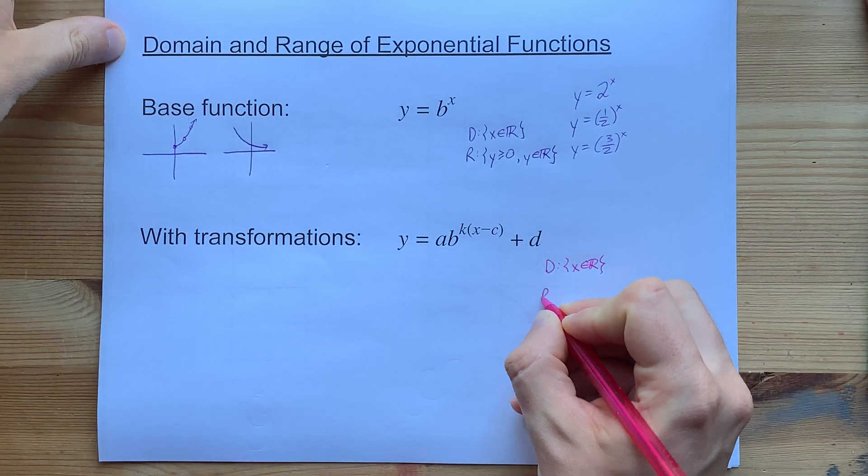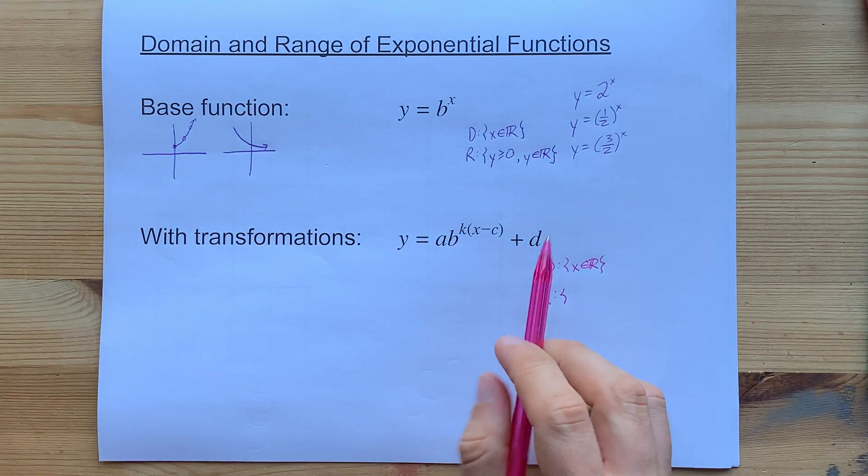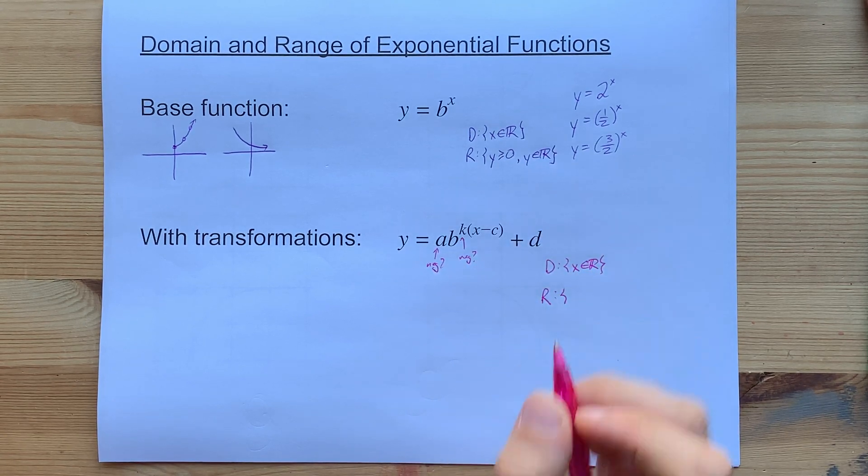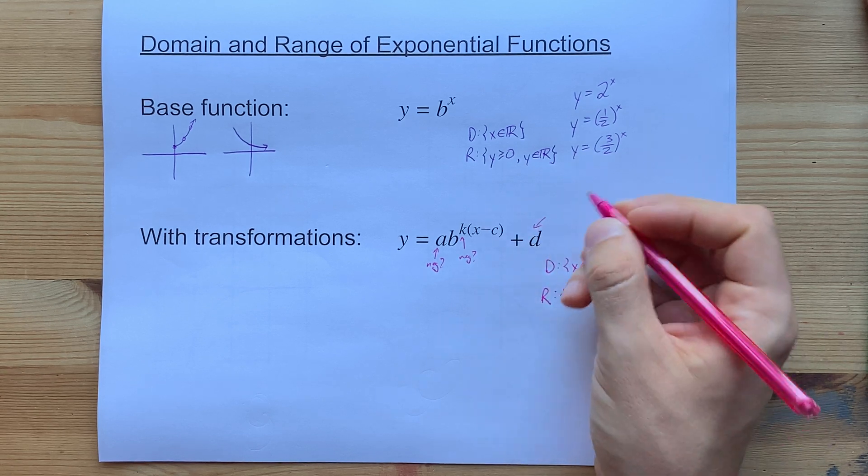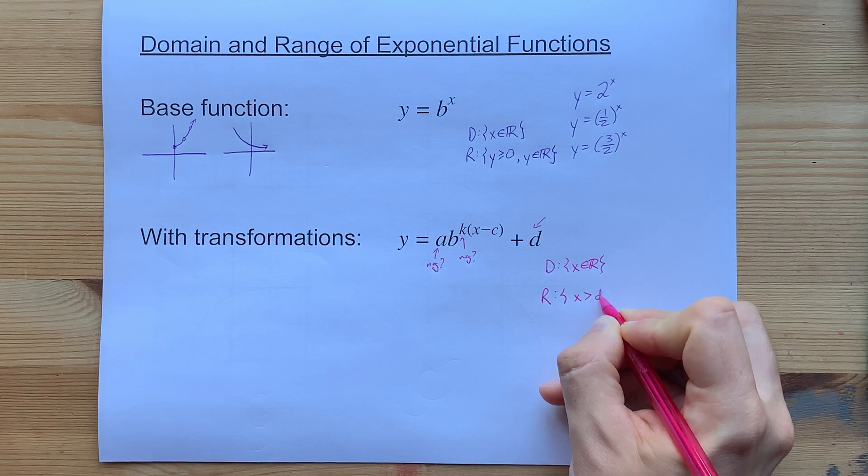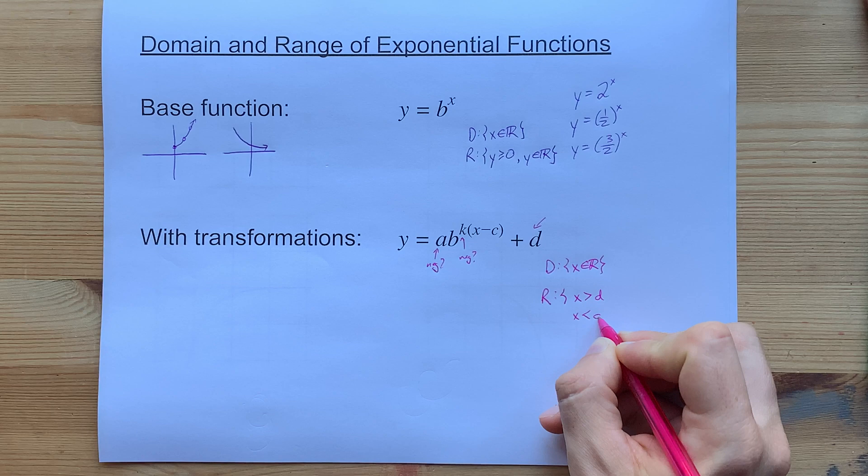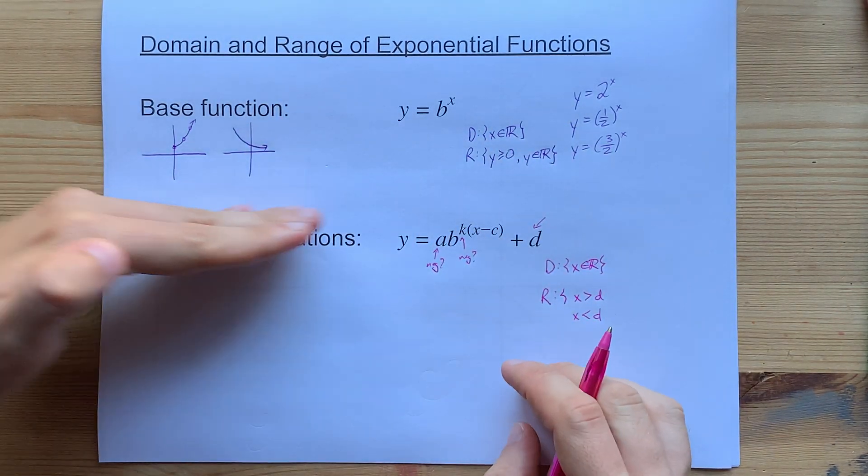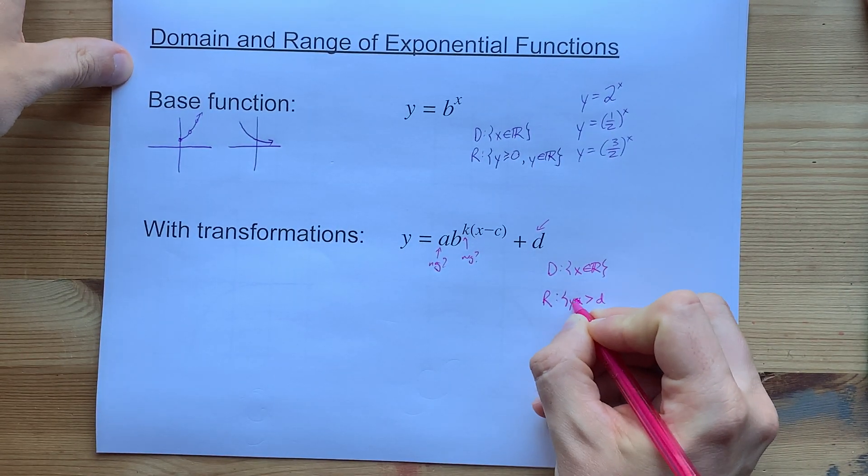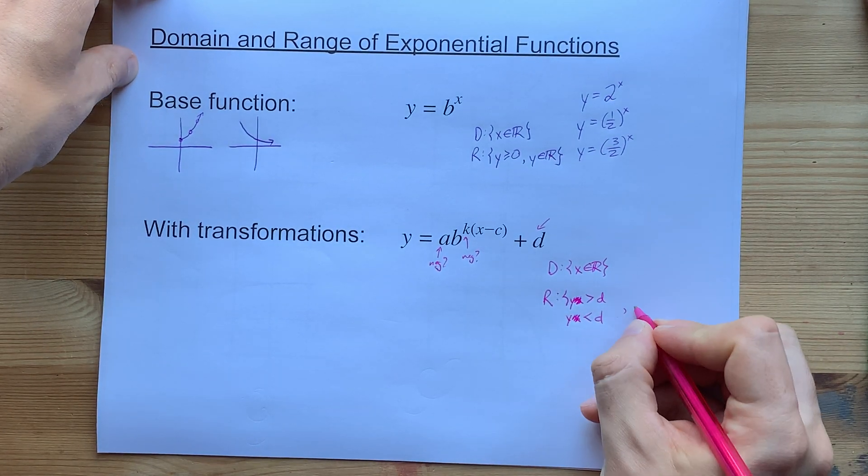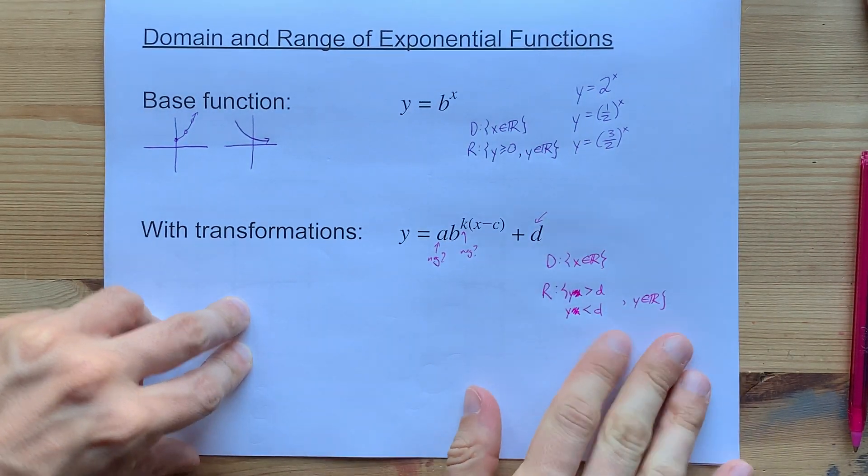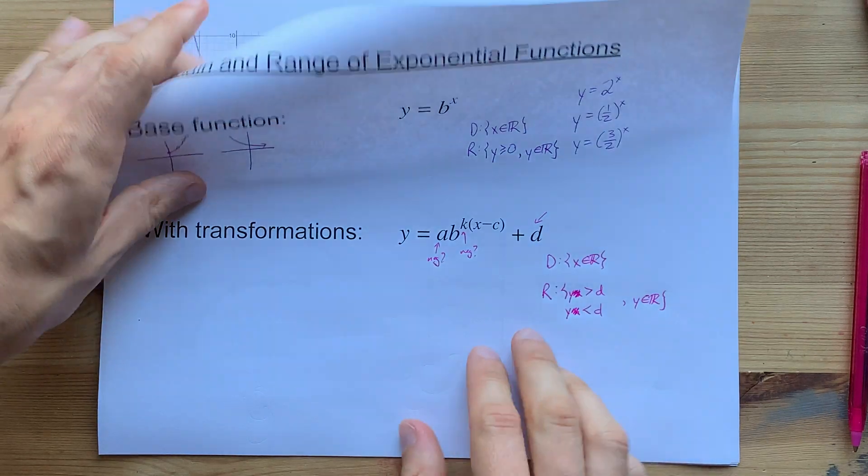The range, on the other hand, is going to be different. The range depends on whether or not there's a negative here, whether or not there's a negative up here on the exponent, and it's going to depend on the vertical shift as well. You're either going to have y's greater than the value of d, or you're going to have y's less than the value of d, depending on whether or not your exponential function is increasing or decreasing. That's y greater than d, y less than d is your two options. Then you'll also have to say y∈R. Enough talk. Let's do 24 examples together.